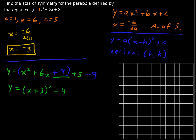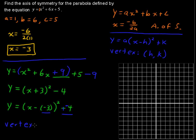Notice that the formula says x minus h. We can write the plus 3 as minus a negative 3, and that's okay — we're not changing the value at all. Minus a negative is the same as a positive; we're just rewriting it to fit that form. We could also write the minus 4 as plus a negative 4 to fit the plus k. So we have a vertex for this parabola of negative 3, negative 4.